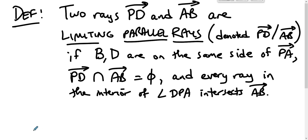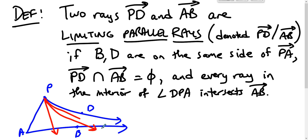So picture, here's ray AB. Here's ray PD. There's segment PA. D and B are on the same side of PA. PD is parallel to AB and every ray in the interior of angle APD intersects ray AB. This one does. This one does. There is no rogue parallel ray. There's no rogue parallel ray inside of angle DPA.